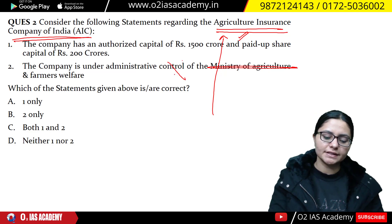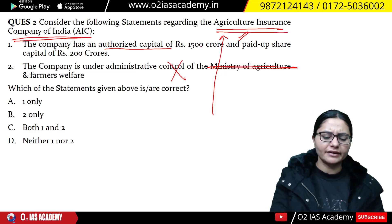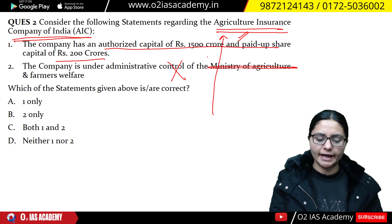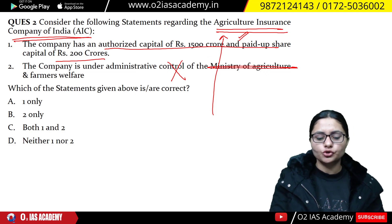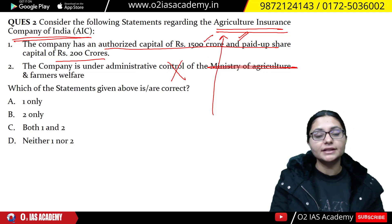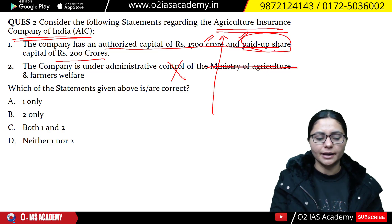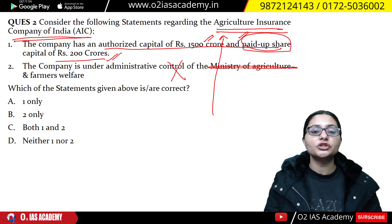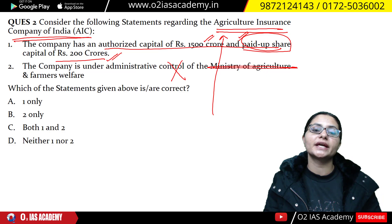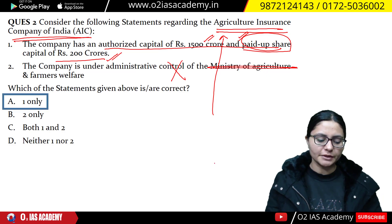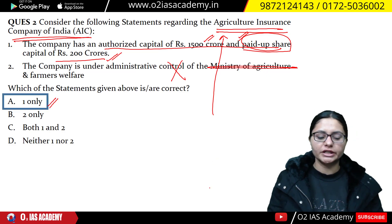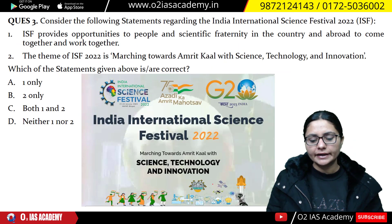The company has different capital structures. The authorized capital is Rs. 1500 crore, and the paid-up share capital is Rs. 200 crore. So the first statement is totally correct. The answer for this question is that only statement one is correct.